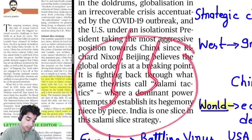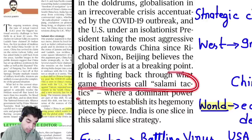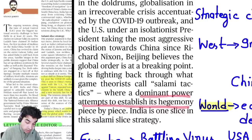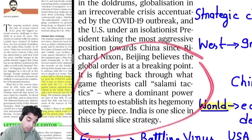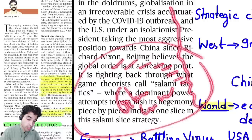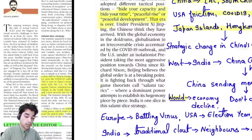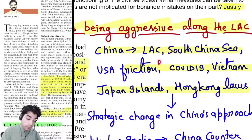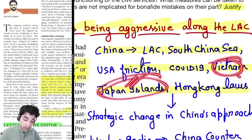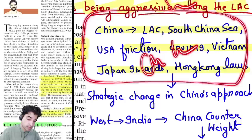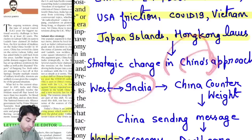In this entire backdrop, China sees this as an opportunity to take over its world position and increase its presence. Game theorists call this 'salami tactics' — where a dominant power attempts to establish its hegemony piece by piece. India is one slice in this salami-slicing strategy. China is trying to increase its global hegemony — India is just one part of it. China has issues along the LAC with India, in the South China Sea, friction with USA, COVID-19 threat, Vietnam-Japan island disputes, Hong Kong law — China is attempting a strategic change in approach across the board.